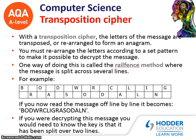Another type of encryption is the Transposition cipher. With a transposition cipher, the letters of the message are transposed or rearranged to form an anagram. You must rearrange the letters according to a set pattern to make it possible to decrypt the message. One way to do this is called the rail fence, where a message is split across several lines. For example, if we take 'Broadsword calling' and split every other letter across two lines, we get letters like B, O, D, W, R on one line and the rest on another — that is the new encrypted message. To decrypt it you would need to know the key — that it has been split over two lines. This is the rail fence cipher type, a transposition cipher that encodes a message by splitting it over rows.